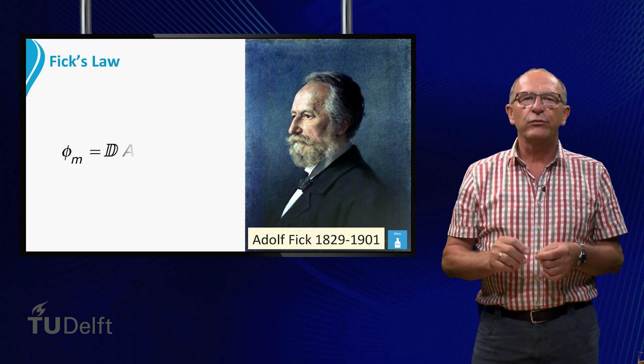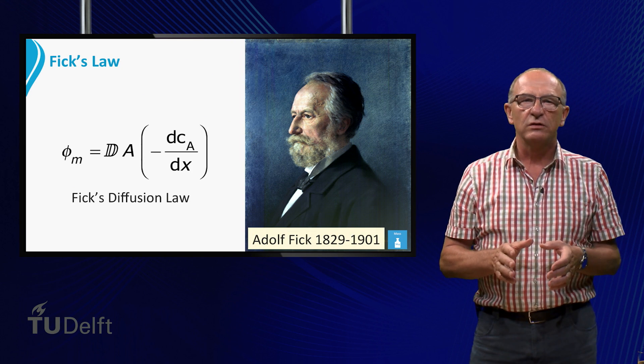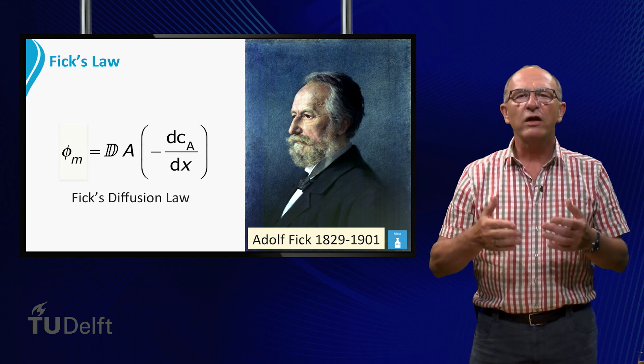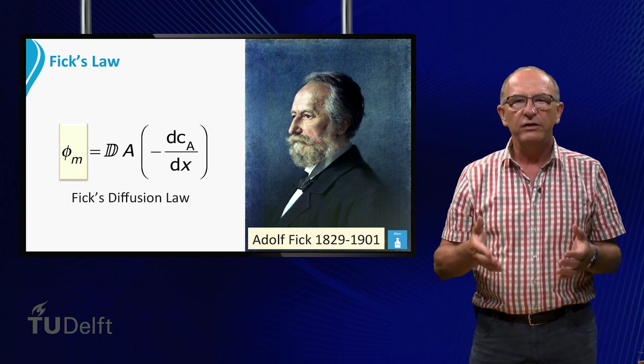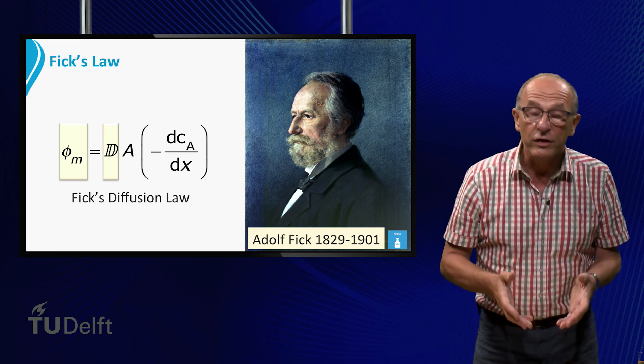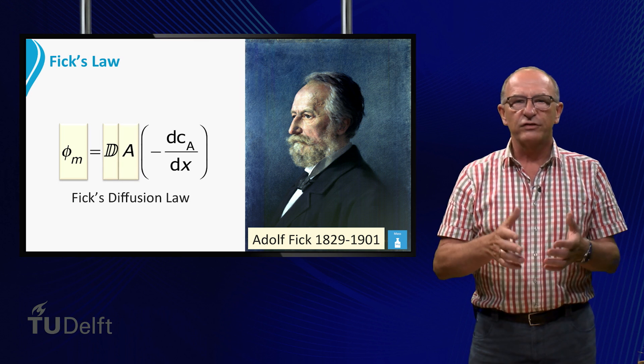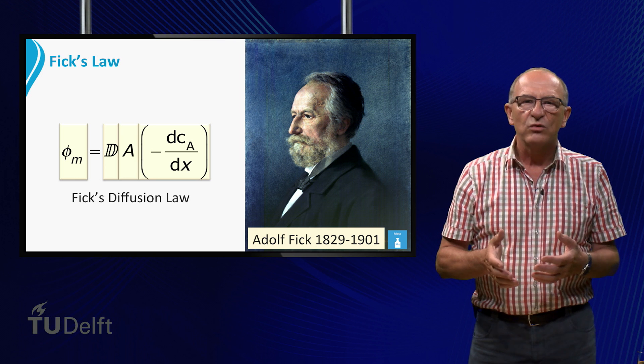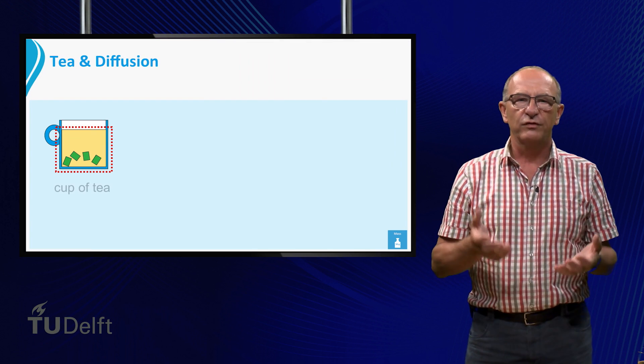Today we try to understand the basis of diffusion. Many years ago, Fick already found that the mass flow rate phi m by diffusion is proportional to the diffusion coefficient d multiplied by the surface area and the concentration gradient. The question is, what can we do with Fick's observations?